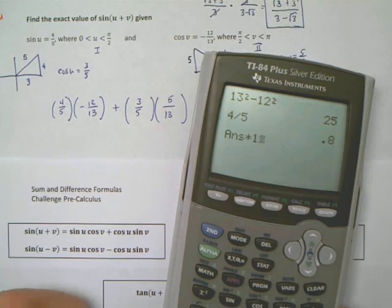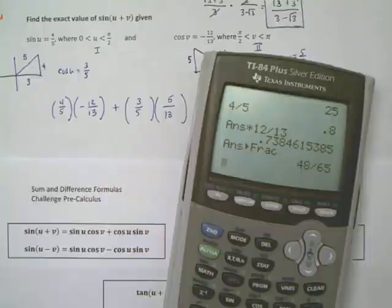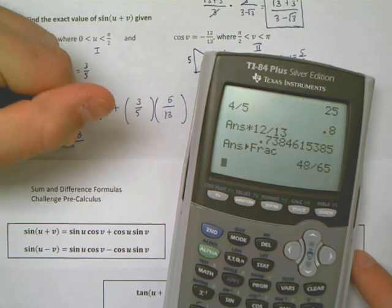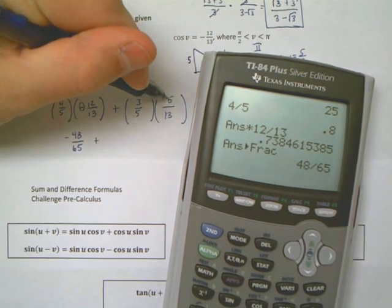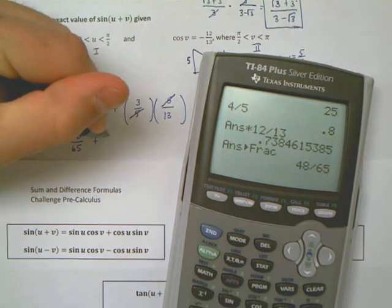So we get our calculators out. I'm going to do this one set of fractions at a time. Left side, 4/5 times 12/13. It's 48/65. It is negative because of this negative sign here. So it's negative 48/65 plus.